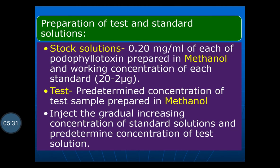Preparation of test and standard: the standard is 0.2 mg/ml of podophyllotoxin prepared in methanol, and working concentrations are prepared from 2 to 20 micrograms. For the test, a predetermined concentration of the test sample is prepared in methanol. Gradually increasing concentrations of the standard solutions and the predetermined concentration of the test solution are introduced into the HPLC column.